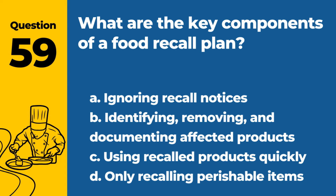Question 59. What are the key components of a food recall plan? a. Ignoring recall notices. b. Identifying, removing, and documenting affected products. c. Using recalled products quickly. d. Only recalling perishable items. Answer: b. Identifying, removing, and documenting affected products. A recall plan should effectively manage product recalls to ensure safety.